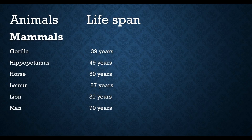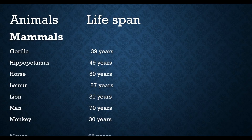Man lifespan is 70 years. Monkey lifespan is 30 years. Mouse lifespan is 65 years.